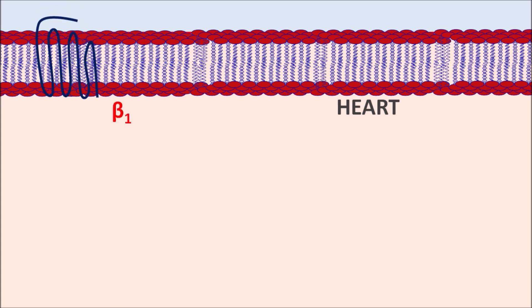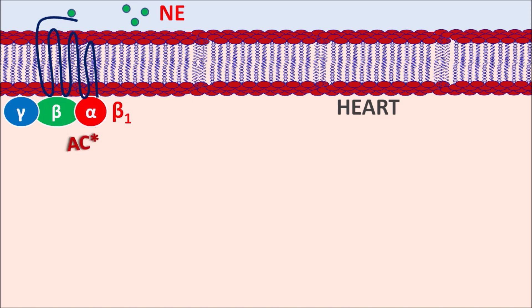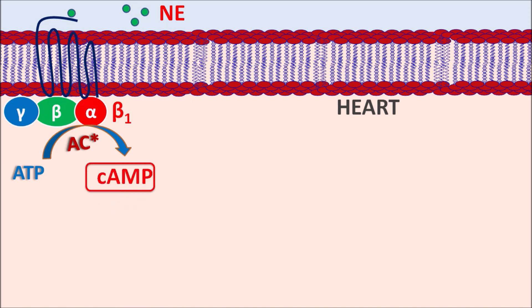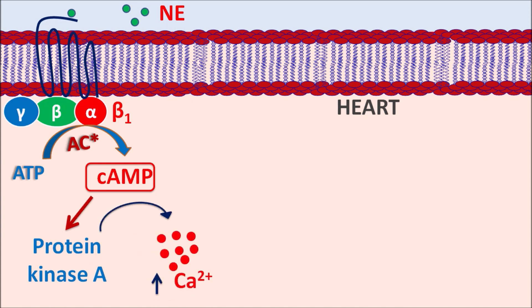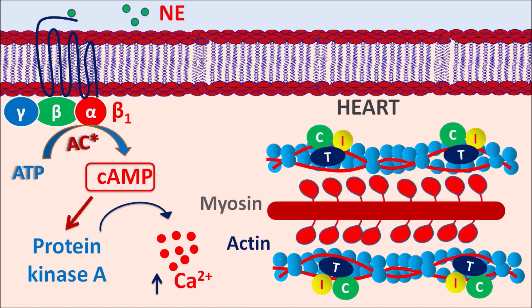Now let us see how this drug acts. On the heart, the important adrenergic receptors are beta-1 receptors. These beta-1 receptors are G protein-coupled receptors with alpha, beta, gamma subunits, working through the alpha subunit in a stimulatory manner. Norepinephrine can act on these beta-1 receptors; when it binds, the receptors activate adenylyl cyclase, which converts ATP into the secondary messenger cyclic AMP. This cyclic AMP produces many functions within the cell through activation of protein kinase A, which can activate calcium release from the sarcoplasmic reticulum, increasing intracellular calcium levels and resulting in contraction of the actin-myosin filaments.